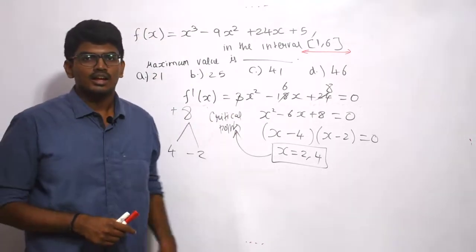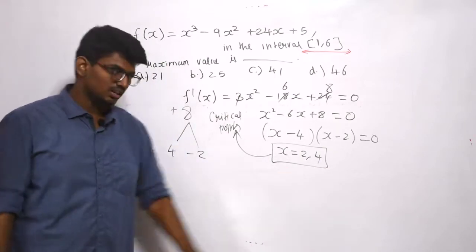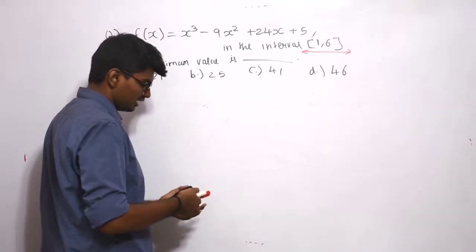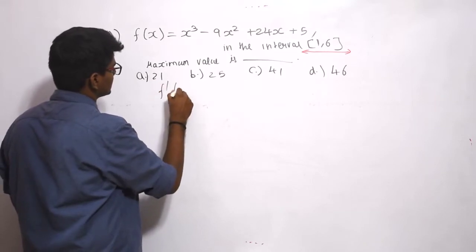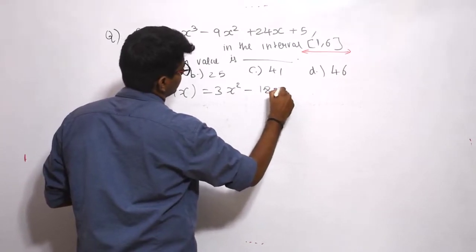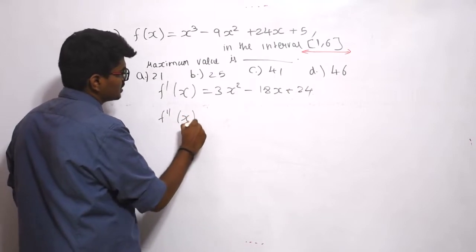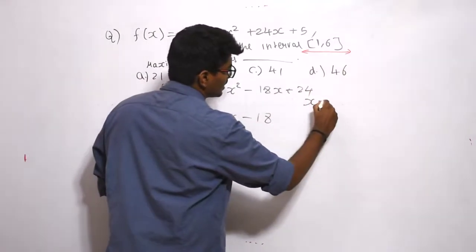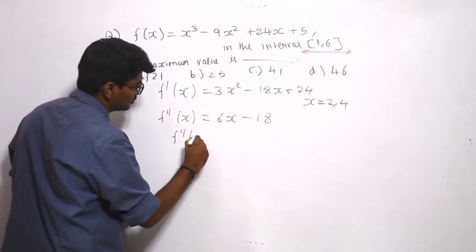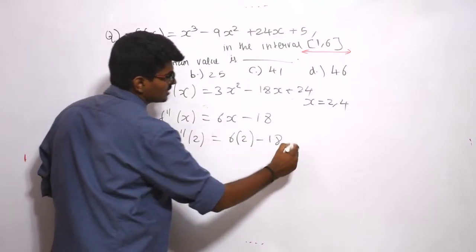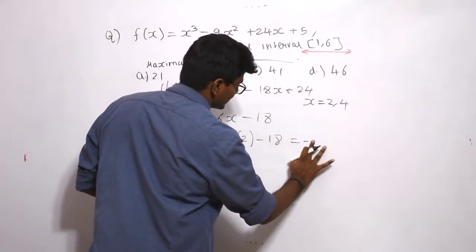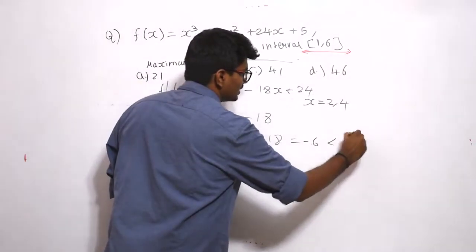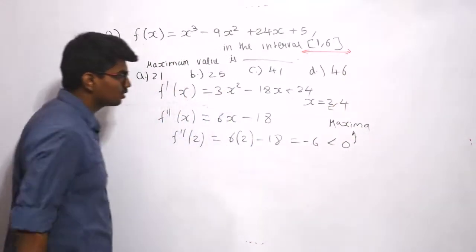We do not yet know which is maxima and which is minima. To find that, we differentiate again: f''(x) = 6x - 18. Substituting x = 2: f''(2) = 12 - 18 = -6, which is negative, so x = 2 corresponds to maxima.